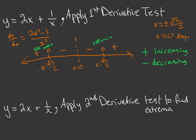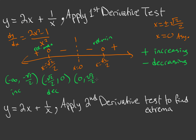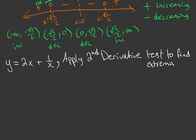To put our intervals into words: (−∞, −√2/2) is increasing; (−√2/2, 0) is decreasing; (0, √2/2) is also decreasing; and (√2/2, +∞) is increasing.